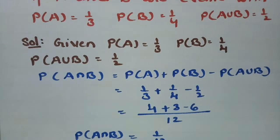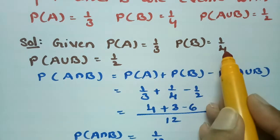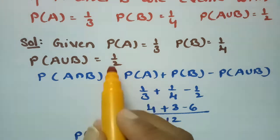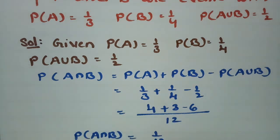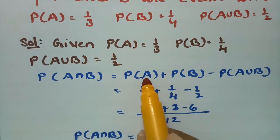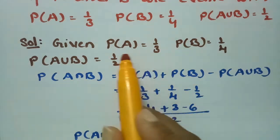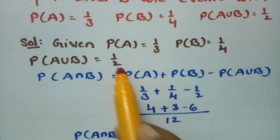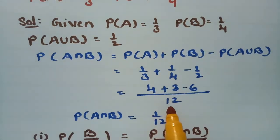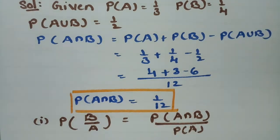So, what is given: P(A) = 1/3, P(B) = 1/4, and P(A∪B) = 1/2. First, we need to find the probability of A intersection B. By the addition rule, P(A∩B) = P(A) + P(B) − P(A∪B) = 1/3 + 1/4 − 1/2. Taking 12 as the LCM, this gives 4 + 3 − 6 = 1, so P(A∩B) = 1/12.